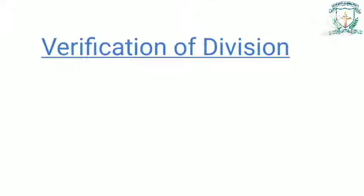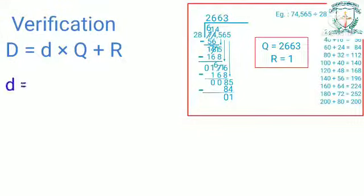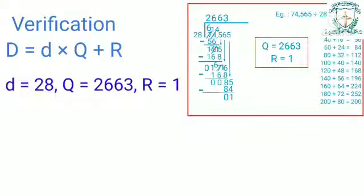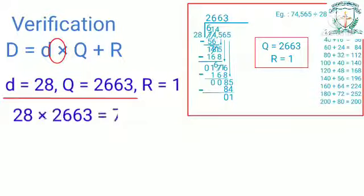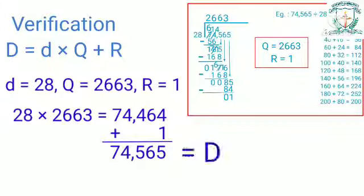Verification of division: we verify division using the formula — Dividend = Divisor × Quotient + Remainder. Here the divisor is 28, the quotient is 2663, and the remainder is 1. When we multiply the divisor and the quotient, we get the product 74,564. Then we add the remainder to get 74,565, which equals the dividend. Therefore, the division answer is correct.